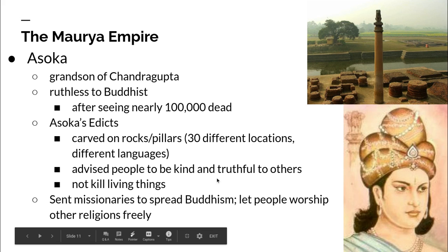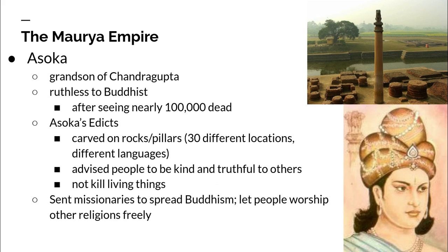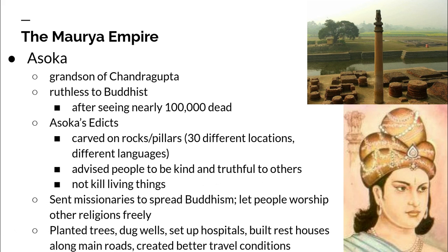Ashoka also sent missionaries to spread Buddhism and built shrines and stupas across the empire. These missionaries went out as teachers of Buddhism throughout India and the rest of Asia, carrying these beliefs beyond the empire. And one thing unique about his rule was that he let people worship other religions freely — they were allowed to worship Hinduism if they chose to.